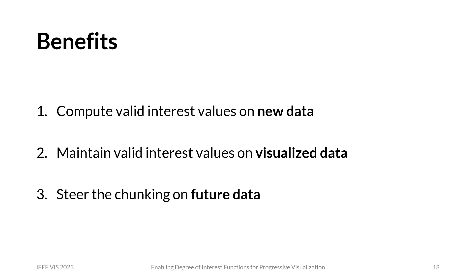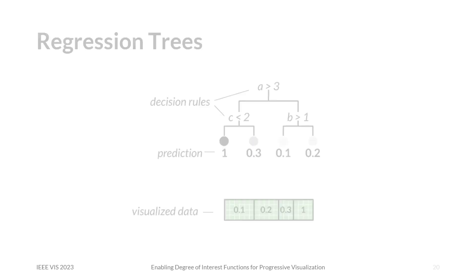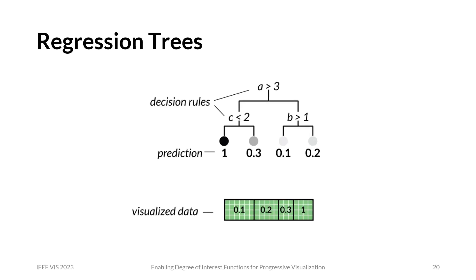The reason for using regression trees is their hierarchical structure, which makes them ideal for our purposes. Regression trees are usually trained on multivariate numerical data and take a numeric variable as a label. In our case, we use the visualized data and the interest values computed by a DOI function to produce a regression tree model. This model consists of decision rules that partition the input dataset along its attributes, and each partition is assigned a predicted value. We basically subdivide the visualized data into partitions of similar interest — for every item, we apply the decision rules and predict its interest.